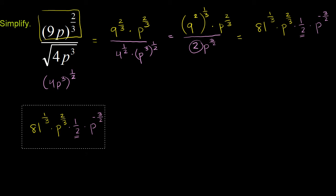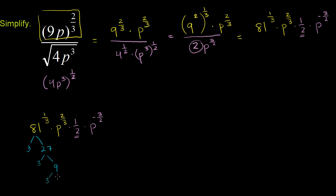Let's think about 81 and see if we can factor it into things that have cube roots. 81 is divisible by 3 — it's 3 times 27, which is 3 times 9, which is 3 times 3. So 81 is 3 to the fourth power. We can rewrite 81 to the 1/3 as 3 times 3 times 3, times 3 to the 1/3. That's the same thing as 81.